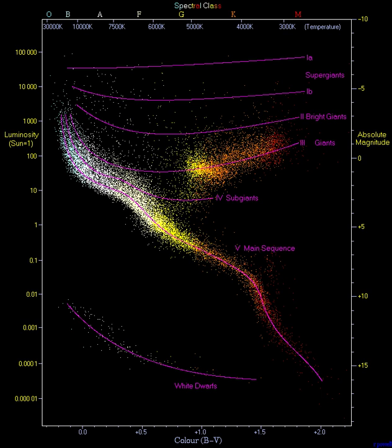Hertzsprung had already been working with this type of diagram, but his first publications showing it were not until 1911. This was also the form of the diagram using apparent magnitudes of a cluster of stars all at the same distance.